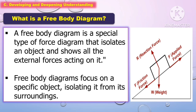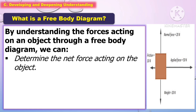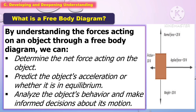A free body diagram is a special type of force diagram that isolates an object and shows all the external forces acting on it. Free body diagrams focus on a specific object, isolating it from its surroundings. By understanding the forces acting on an object through a free body diagram, we can determine the net force, predict the object's acceleration or whether it is in equilibrium, and analyze the object's behavior to make informed decisions about its motion.